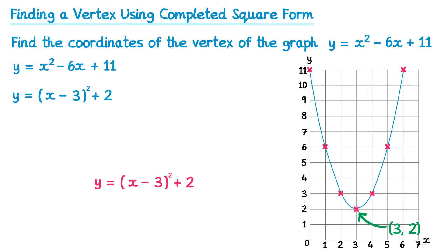Why is 2 the lowest y value? Well, looking at the equation, it's made up of two parts. The first part will always be a square number, since it's something squared. Square numbers can never be negative — when you square any number it turns out positive, or 0. So the lowest possible value from the first part is 0. Then we add 2 to get 2, which is why 2 is the lowest y coordinate.